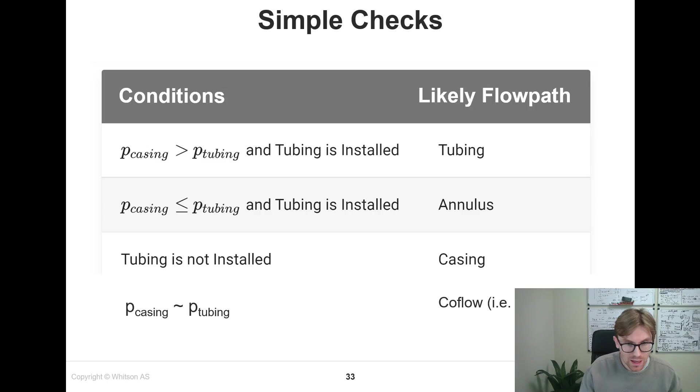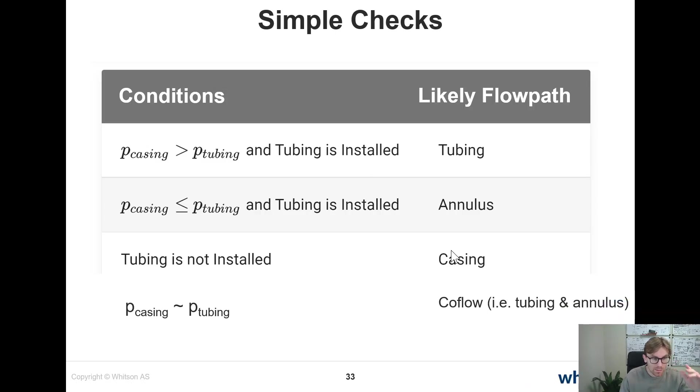So here I have some simple checks that I would recommend you to go in and look at. I'm going to move myself a little bit here down to the right. For instance, if you have casing pressures and they're larger than the tubing while tubing is installed, well, then most likely your flow path is tubing. If you have tubing installed, but the casing pressure is less than or equal to the tubing, then typically we're dealing with annulus flow. You inject through the tubing, injection gas, and then you produce up the annulus. If tubing is not installed, of course, then it must be casing flow.